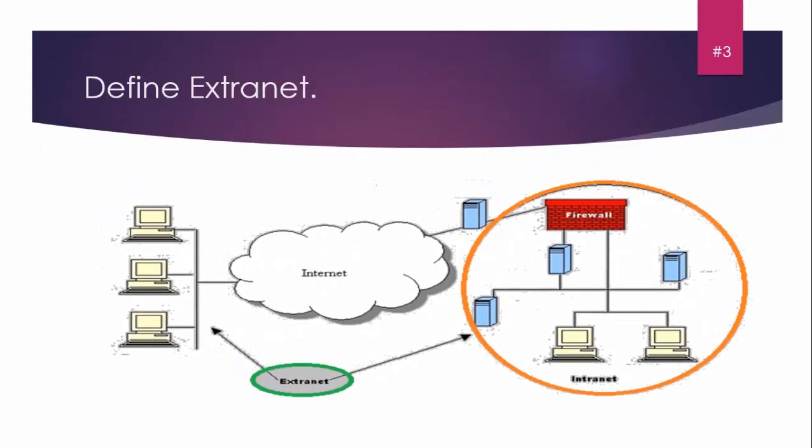Question number three: Define extranet. Look at the diagram - in this circle there is one intranet, and this portion shows another intranet. When these two are connected, this is called extranet. We can also call this entire network the internet.